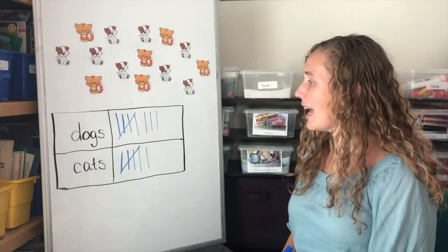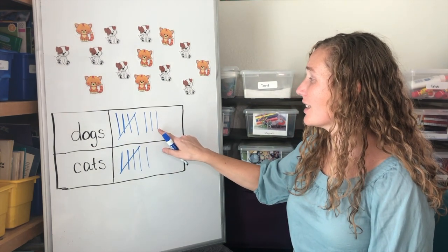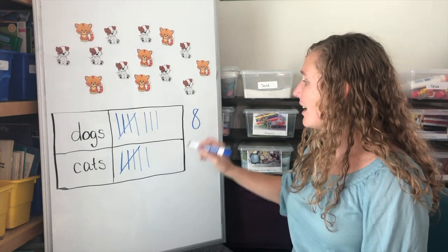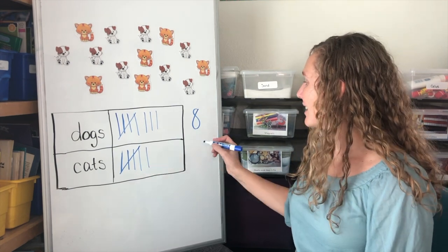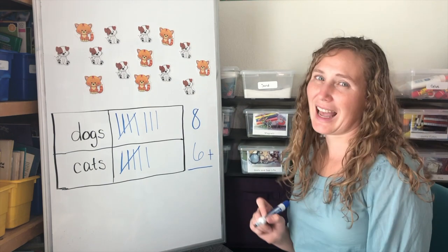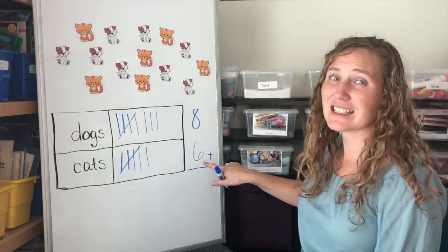We have five, six, seven, eight dogs, and five, six cats. How many do we have in all? What is eight plus six?